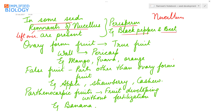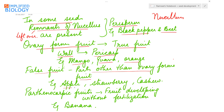As the embryo develops, the ovary forms the fruit. When the ovary forms the fruit, it is referred to as a true fruit, and the wall of the ovary becomes the fruit wall, referred to as pericarp — examples include mango, guava, and orange. When parts other than the ovary form the fruit, it is referred to as a false fruit — examples include apple where the thalamus forms the fruit, strawberry where the complete inflorescence forms the fruit, and cashew where the peduncle is the fruit. Fruits that develop without fertilization are referred to as parthenocarpic fruits — the best example is banana, which is seedless.